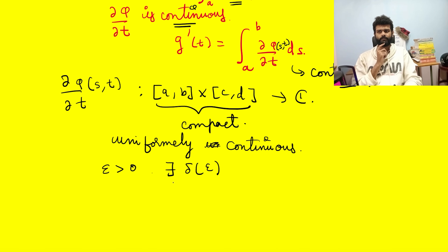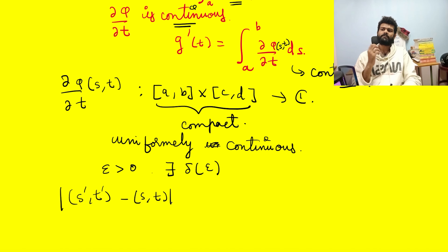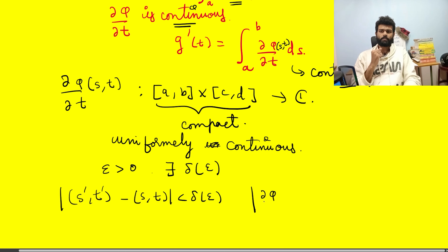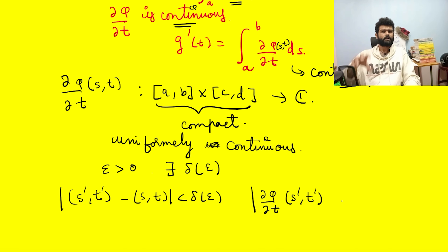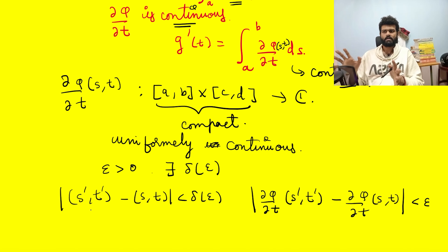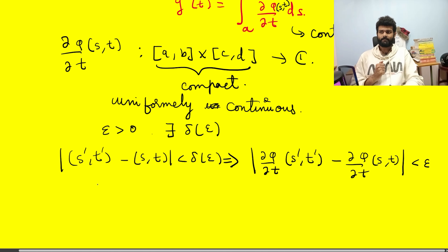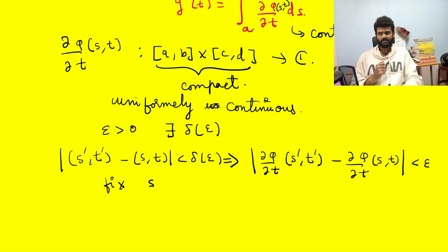Uniform continuity means: given epsilon, there exists delta depending on epsilon such that if you pick two points (s', t') and (s, t) which differ by less than delta(epsilon), then the partial derivatives at those points differ by less than epsilon. So if any two points differ by delta(epsilon), the partial derivative values are bounded by epsilon.